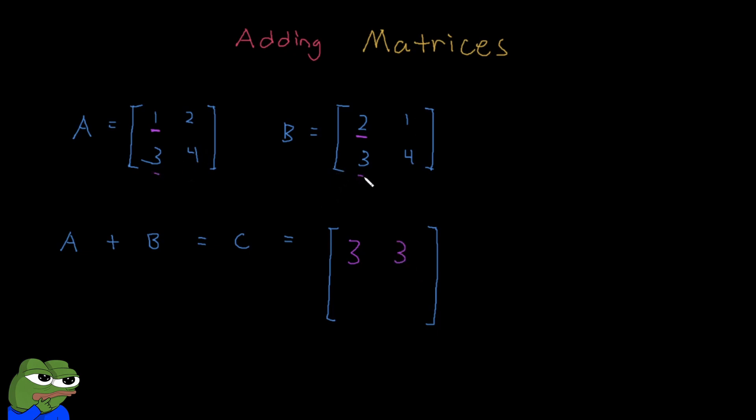Then we do 3 plus 3, which is 6. And we do 4 plus 4, which is 8. So that's how you add matrices.